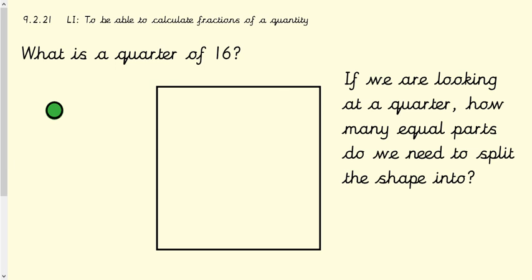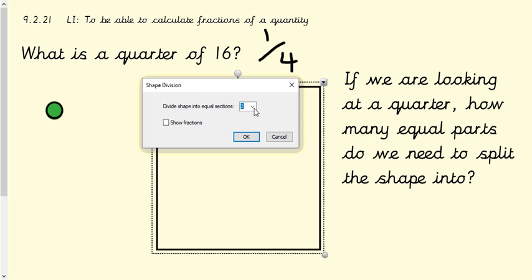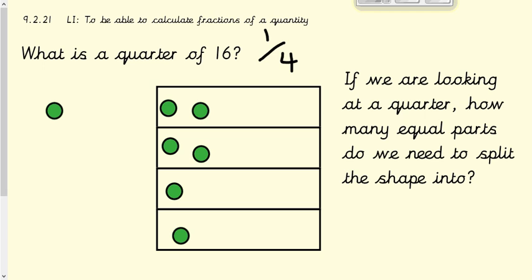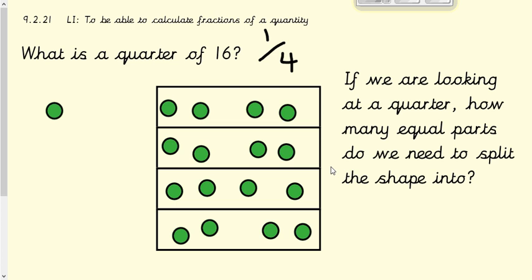What is a quarter of 16? We're looking at a quarter, so think about what that would look like as a fraction — it's one over four. So how many equal sections do we need to split our shape into? Four. We're splitting our shape into four equal sections and sharing out 16 counters into these four boxes. I've shared them equally and we count how many are in one section — that's four. So therefore, one quarter of 16 equals four.